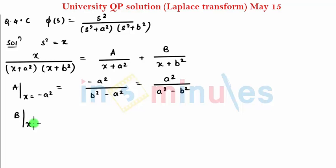I can find B by substituting X equal to minus B squared. This I can write as minus B squared divided by, after substituting here minus B squared, I get A squared minus B squared, which I can write as B squared divided by B squared minus A squared. So we have found A and B.